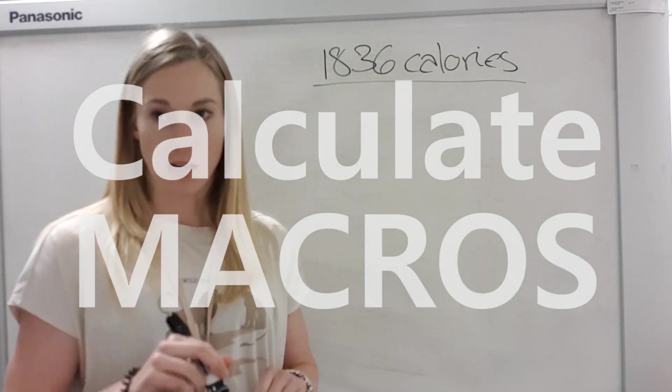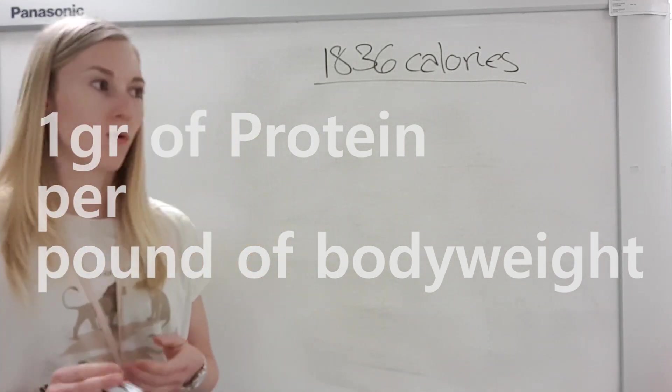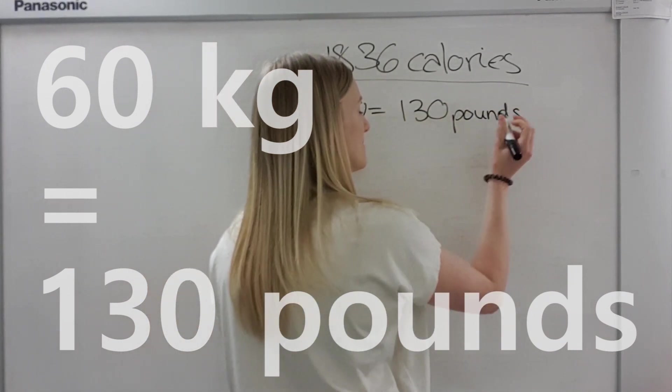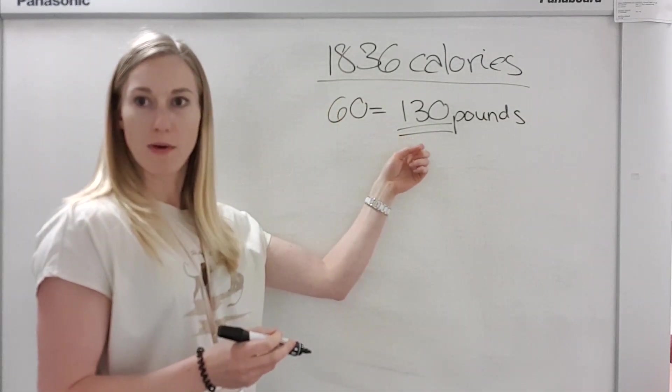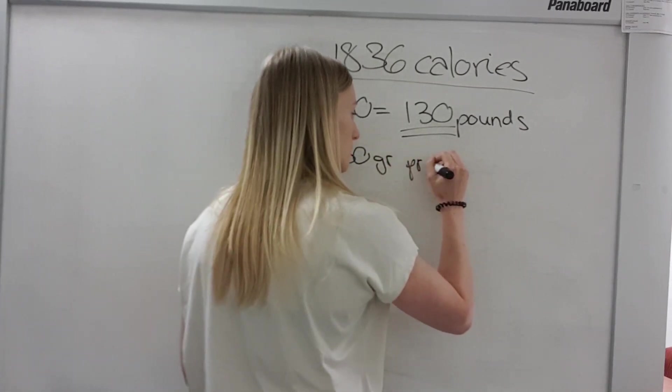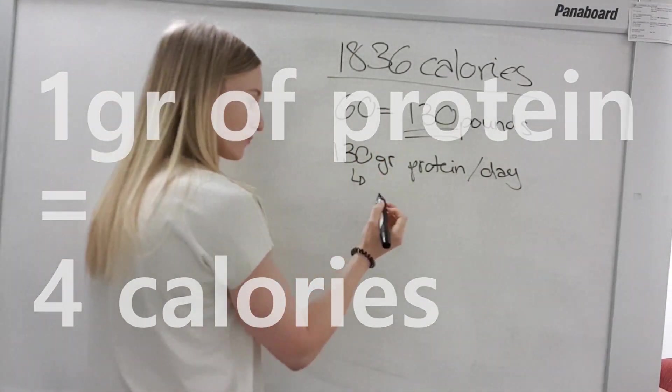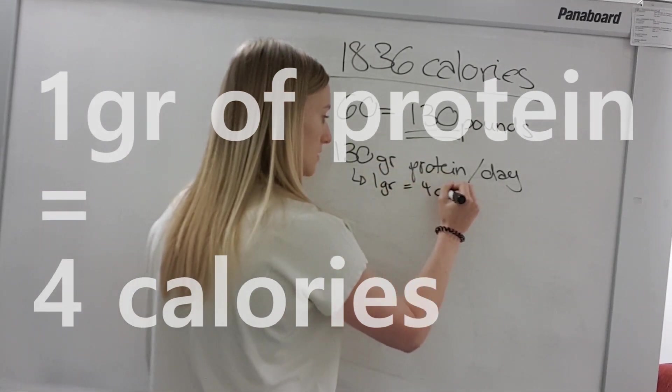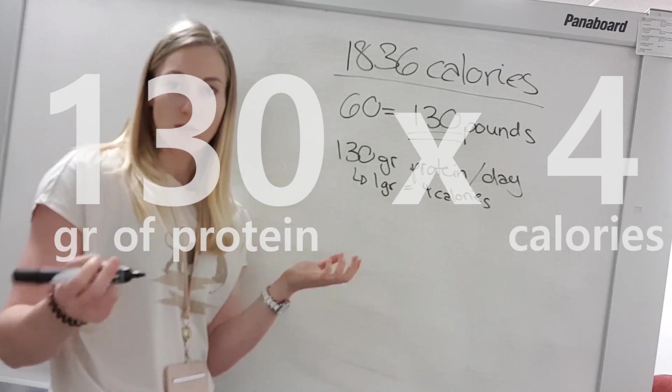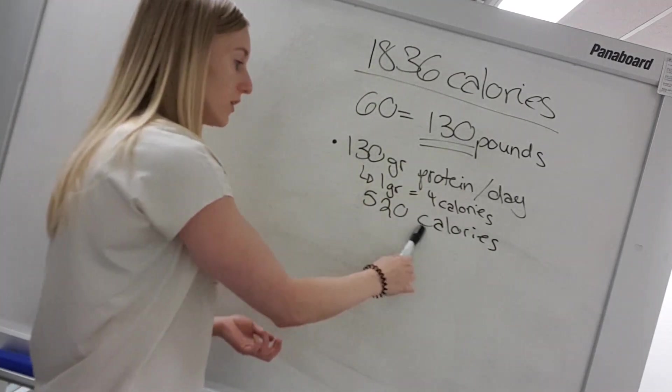So now we're going to start calculating our macronutrients. So you want to consume about one gram of protein per pound of your body weight. So I'm 60 kilos, which is about 130 pounds. So this is actually my amount of grams of protein I want to consume. So I want to consume 130 grams of protein per day. Now 130 grams of protein, so one gram of protein, so one gram is four calories. So I need to do 130 times four to figure out how many calories of protein I will need, which is 520 calories.